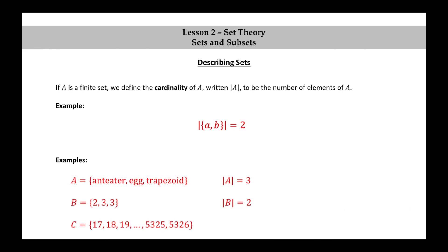How about this one? C equals the set consisting of 17, 18, 19, dot, dot, dot, 5,325, 5,326. The cardinality of this set is 5,310.